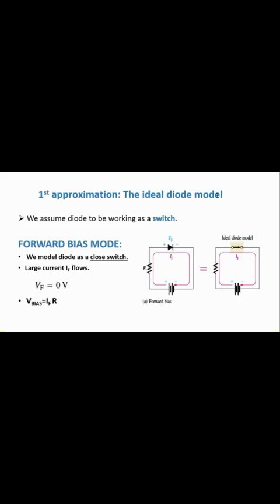The first model is the ideal diode model. In this model we assume the diode works as a switch — either a closed switch or an open switch. In forward bias mode, we model the diode as a closed switch. A closed switch means the voltage drop across that component is zero, so the forward bias voltage drop Vf equals zero.